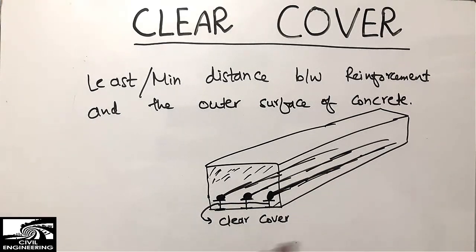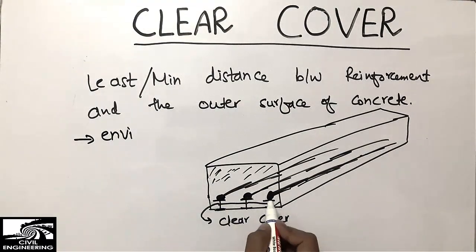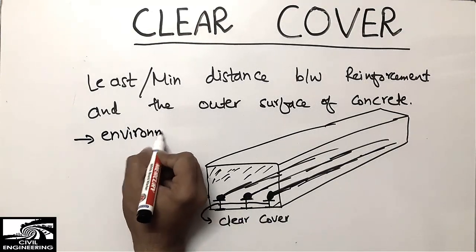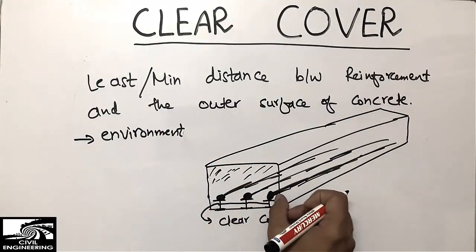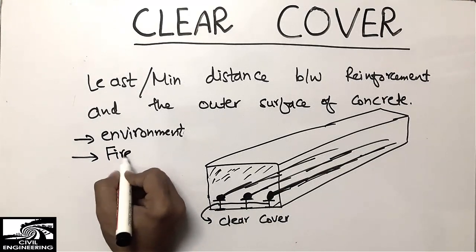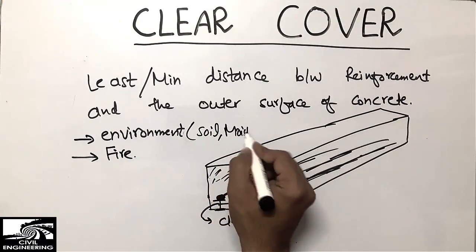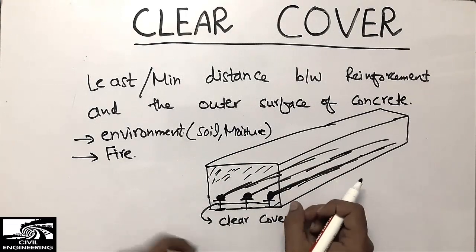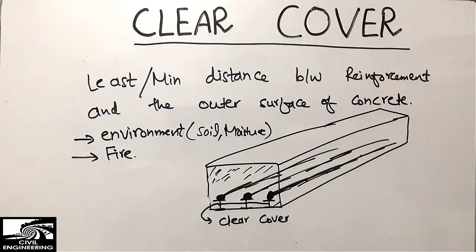Now, why do we provide clear cover? It is provided to keep the steel bar safe from environmental conditions — to protect the steel bar from corrosion. Mainly, it protects against fire resistance, corrosion, and environmental exposure including soil and moisture. We provide this cover to keep the steel safe, and it is very important for every structural member.